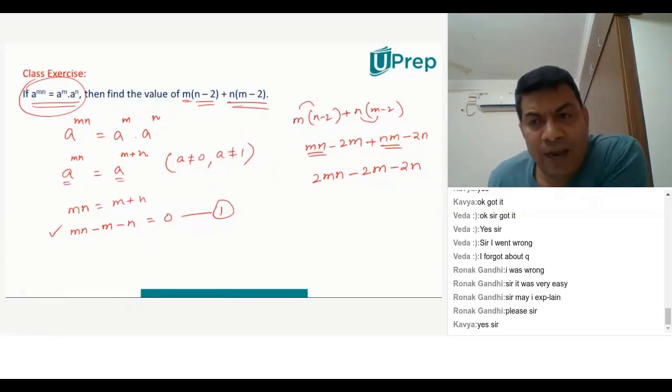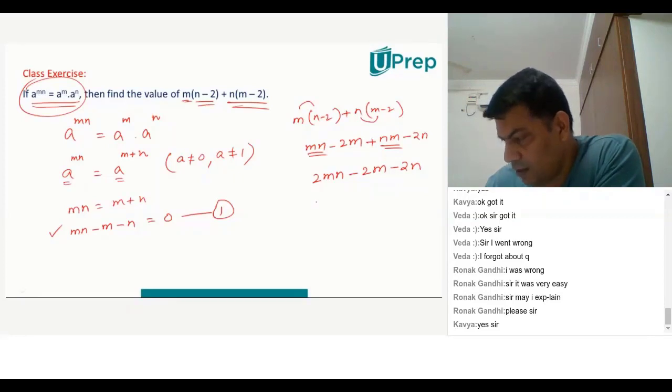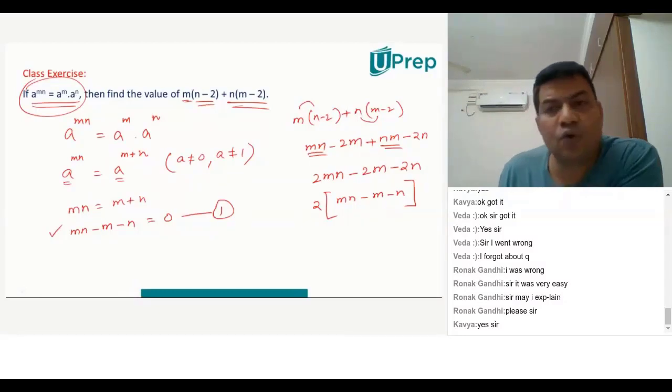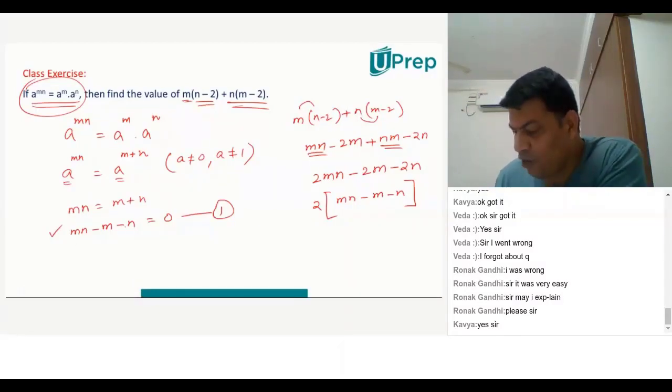So now we can apply this principle that mn minus m minus n is equal to 0. So therefore, obviously 2mn minus 2m minus 2n has to be equal to 0. Correct. We'll take out 2 common, which is mn minus m minus n. But we know that mn minus m minus n is 0. Therefore, it is 2 into 0. Therefore, it is 0.